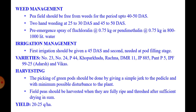Varieties: Number 23, Number 24, P44, Copper, Khada, Rachana, DMR 11, JP 885, Panth P5, IPF 99-25, and Vikas — these are the improved varieties of this crop.